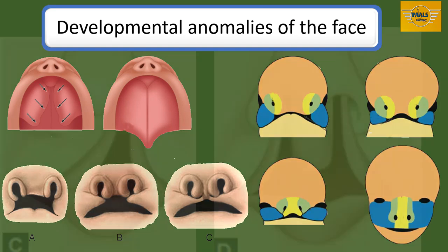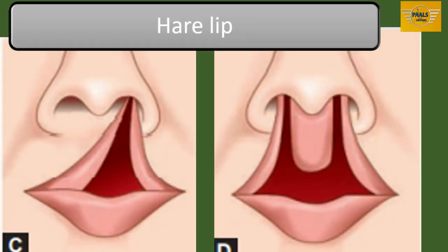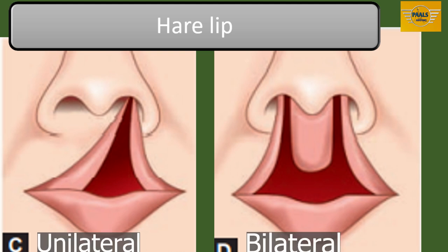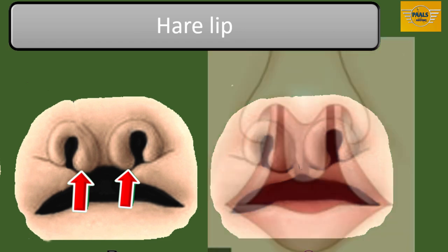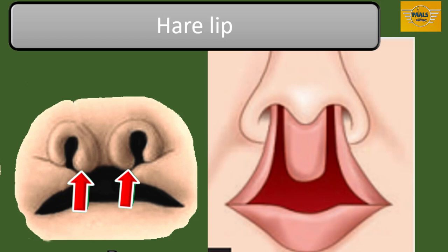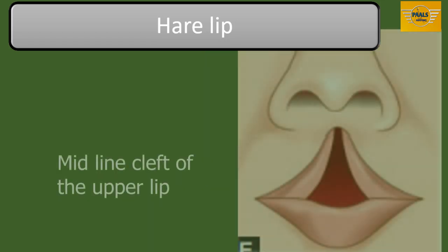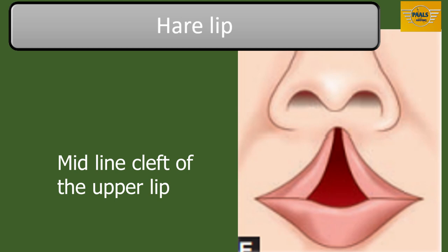The first anomaly we'll handle is the appearance of a cleft in the upper lip, which is called harelip. Harelip can be unilateral or bilateral. Unilateral harelip is when there is a failure of fusion of the maxillary process with the median nasal process on one side. When this failure of fusion happens on both right and left parts, it leads to bilateral harelip.